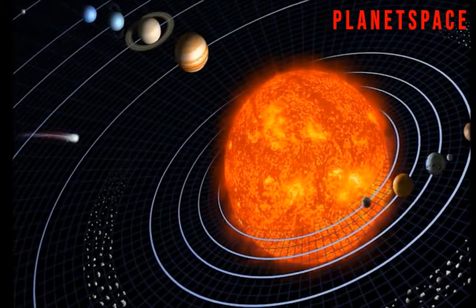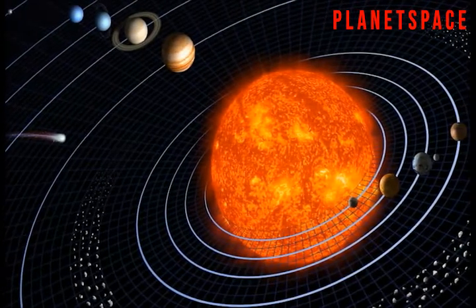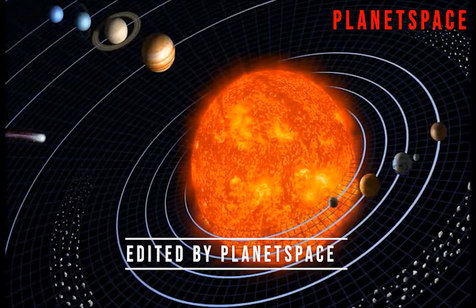We call it the solar system because everything in it is centered around the sun, and solar means something to do with the sun.